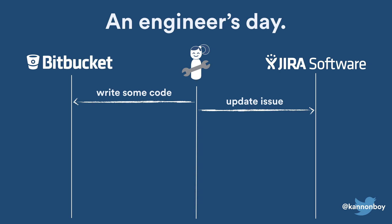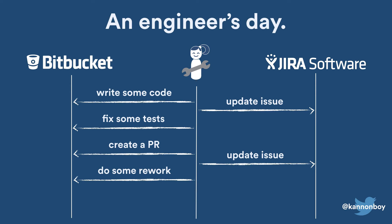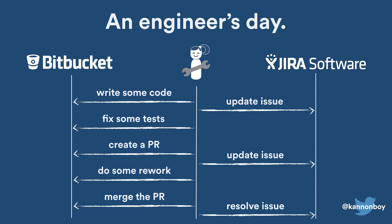Then once Bamboo, or whatever continuous integration server they're using, has picked up their code and run the tests, they'll go and fix whatever tests have broken. After that, they'll create a pull request to get their changes into master, and they'll go and update their issue to be in the in-review state. Then once some developers have raised some feedback, they'll address that feedback and push some more changes to Bitbucket, and finally merge the pull request into the master branch so it's ready to ship. After that, they'll likely go and resolve the issue in Jira.